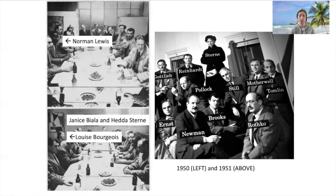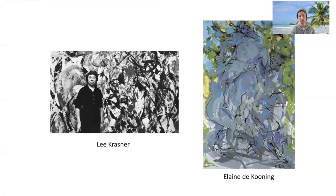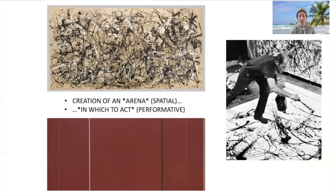If we compare the official portrait of the New York School with another image, we can see that faulty histories of abstract expressionism leave out not only Norman Lewis, but also the women involved — Janice Biala, Hedda Stern, and Louise Bourgeois, for example. These histories also leave out Lee Krasner, who was married to Jackson Pollock, and Elaine de Kooning, who was married to Willem de Kooning. Both were artists in their own right.